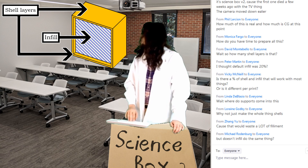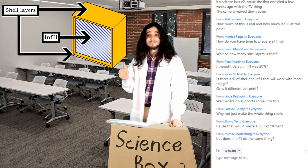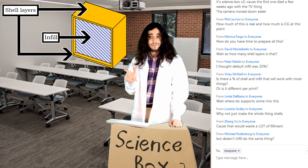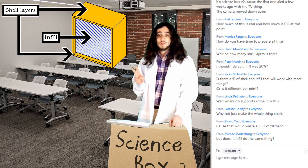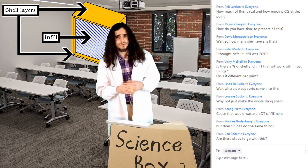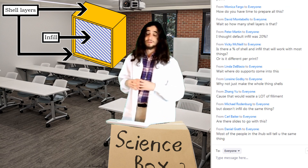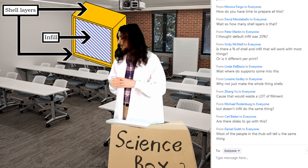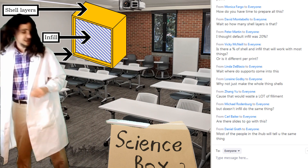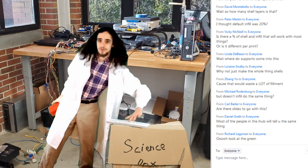So remember, when you're working on the structural integrity of your prints, the two main things you're going to need to look out for are both your infill density and the amount of shell layers you put wrapped around the outside. Those two alone are going to be some of the biggest factors in making sure that your 3D print doesn't fall apart when you actually take it off the printer. I have a great example — we're gonna have to head back to the lab for this one.